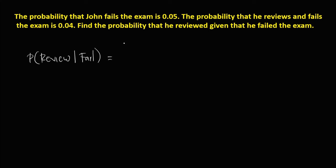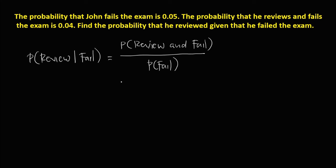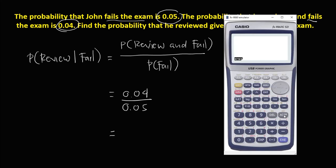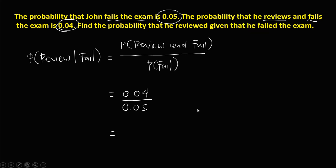We can rewrite this as the probability that John reviewed and failed over the probability of fail. The probability that he reviews and fails the exam is 0.04, and the probability that John fails the exam is 0.05. So we have 0.04 divided by 0.05. The probability is 0.8.